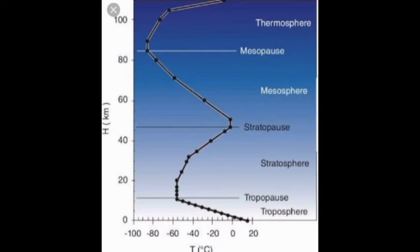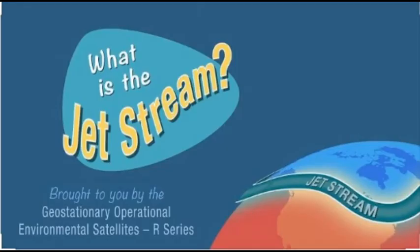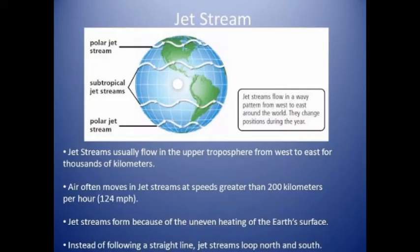Narrow bands of high-speed winds that blow in the upper troposphere and the lower stratosphere are called jet streams. They cause massive weather changes and affect airline routes and paths of storms. These winds blow from west to east for thousands of kilometers, often at speeds greater than 200 kilometers per hour. Jet streams form because of uneven heating on the Earth's surface, and instead of flowing in a straight line, they loop north and south in a meandering shape.